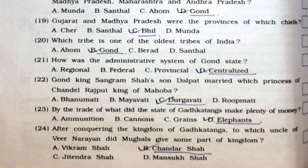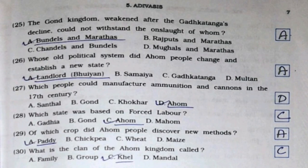Twenty-second: Gond king Sangram Shah's son Dalpat married which princess of Chandel Rajput king of Mahoba? It's option number C, Durgavati. Twenty-third: By the trade of what did the state of Gadkataanga make plenty of money? It's option number D, elephants. Twenty-fourth: After conquering the kingdom of Gadkataanga, to which uncle of Veer Narayan did the Mughals give some part of kingdom? It's option number B, Chandar Shah.